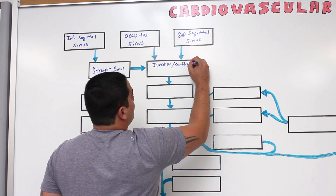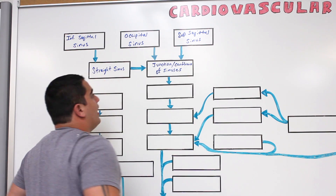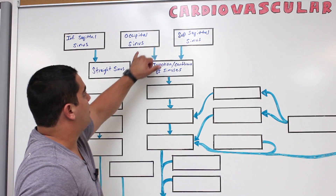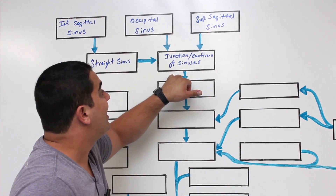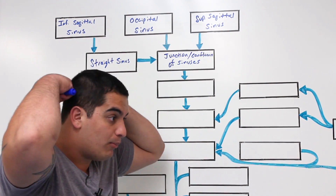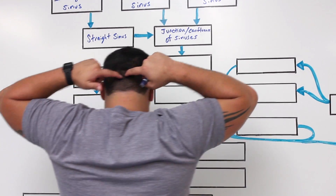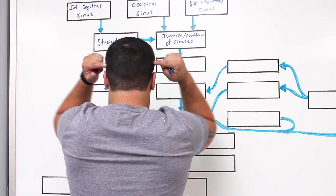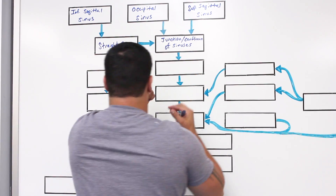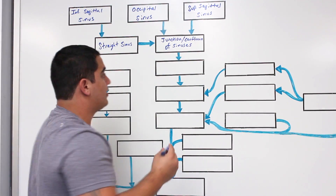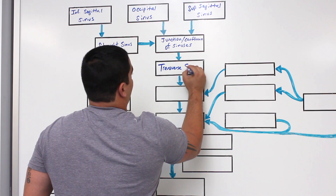From the junction or confluence of sinuses, the blood empties into another special sinus. It moves along the outer sides of the skull — within the back part of the posterior cranial fossa from left to right, from the middle to the outer parts. This is called the transverse sinuses.